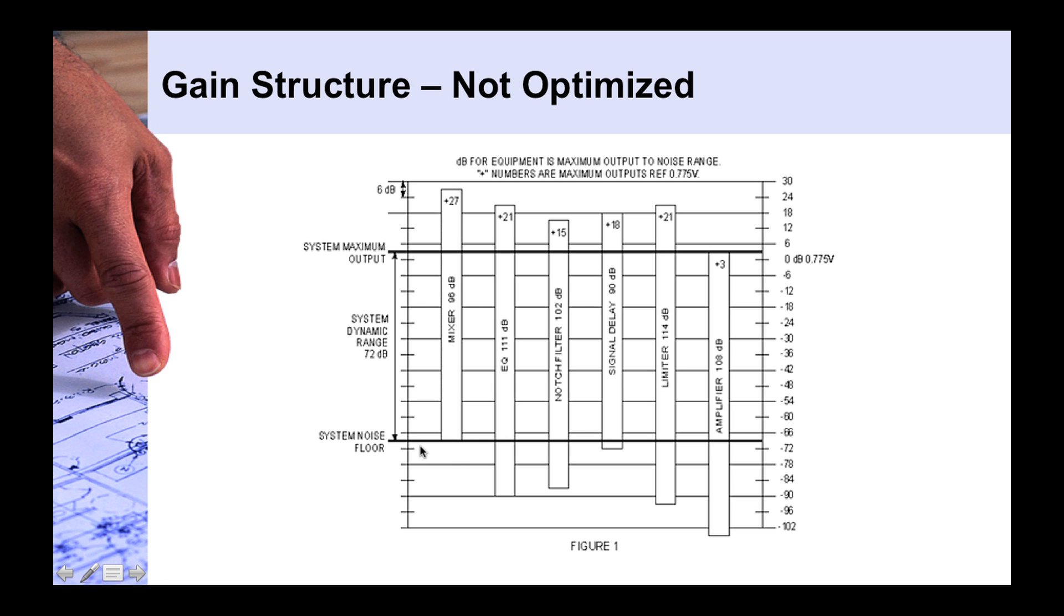And again, our noise floor here is going to be as high as the highest common denominator. So here our mixer actually has the highest noise floor. So the distance here between our noise floor and our maximum output of our system gives us a total system dynamic range of 72 dB. That's the distance between the noise floor and the max output. Again, that's not 72 dBU. That's not a fixed value. It's just simply a measurement of the distance between these two dBU points.